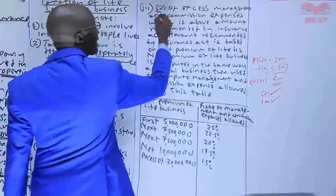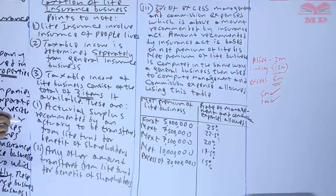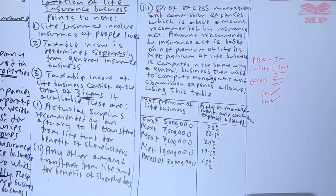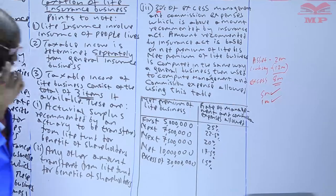The third taxable item is 30 percent of the excess management and commission expense above the amount recommended by the Insurance Act. The amount recommended by the Insurance Act is based on the net premium of the life business. The net premium is computed in the same way as for general insurance business, and it is then used to compute the allowed management and commission expense using a tiered table.